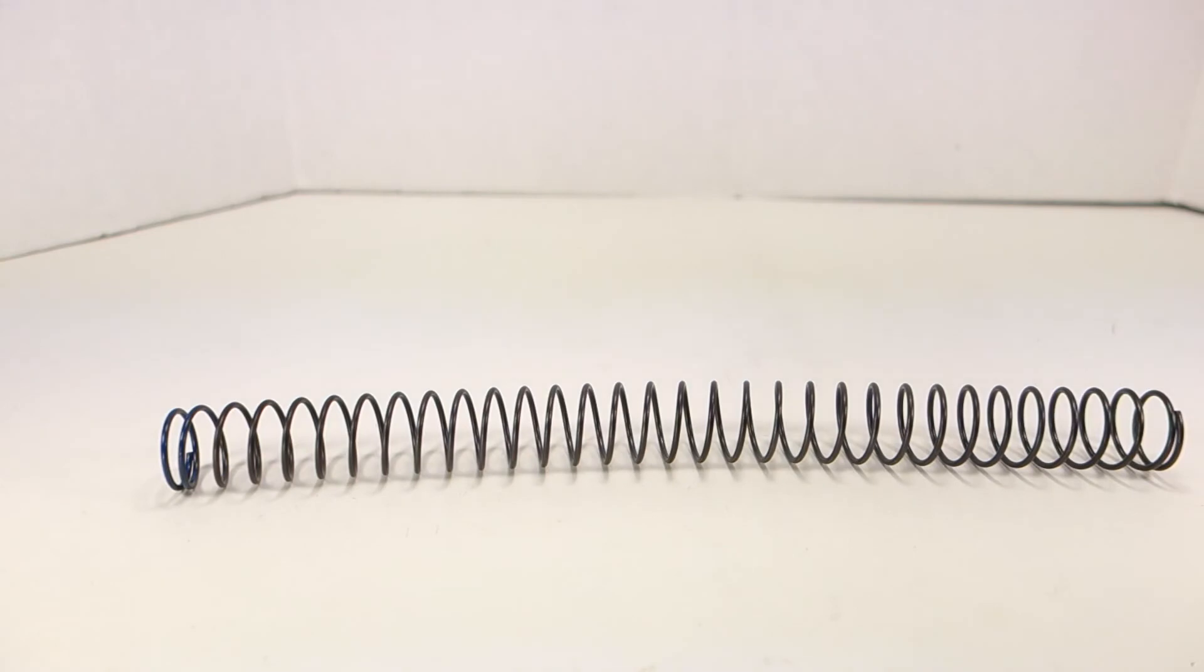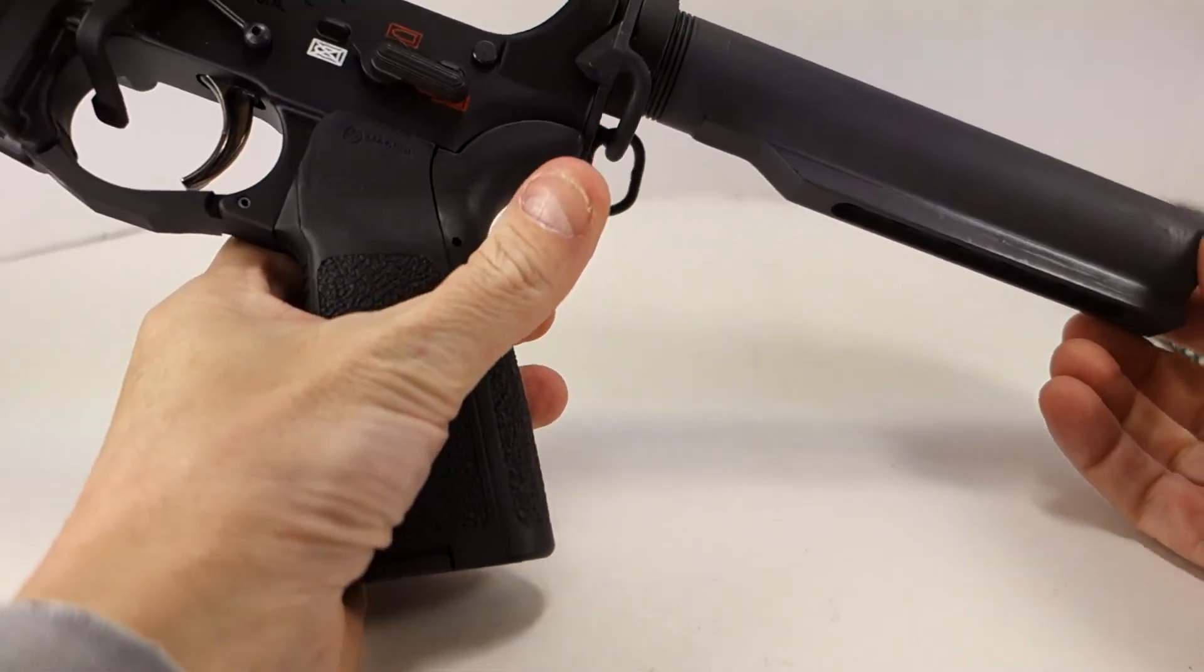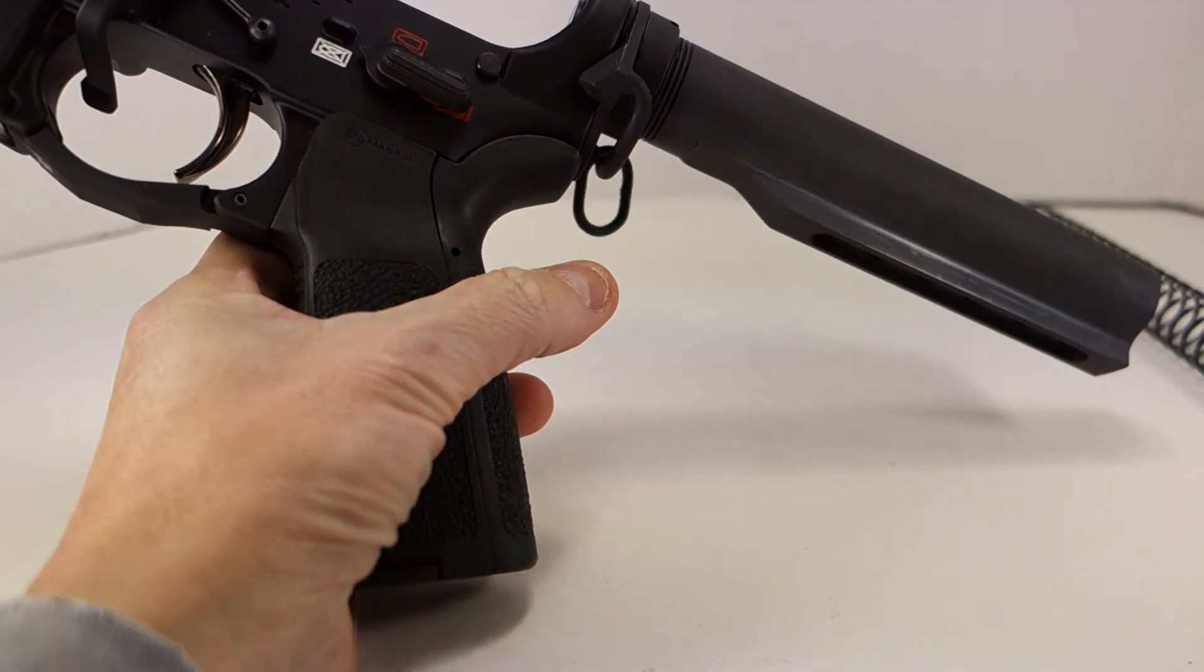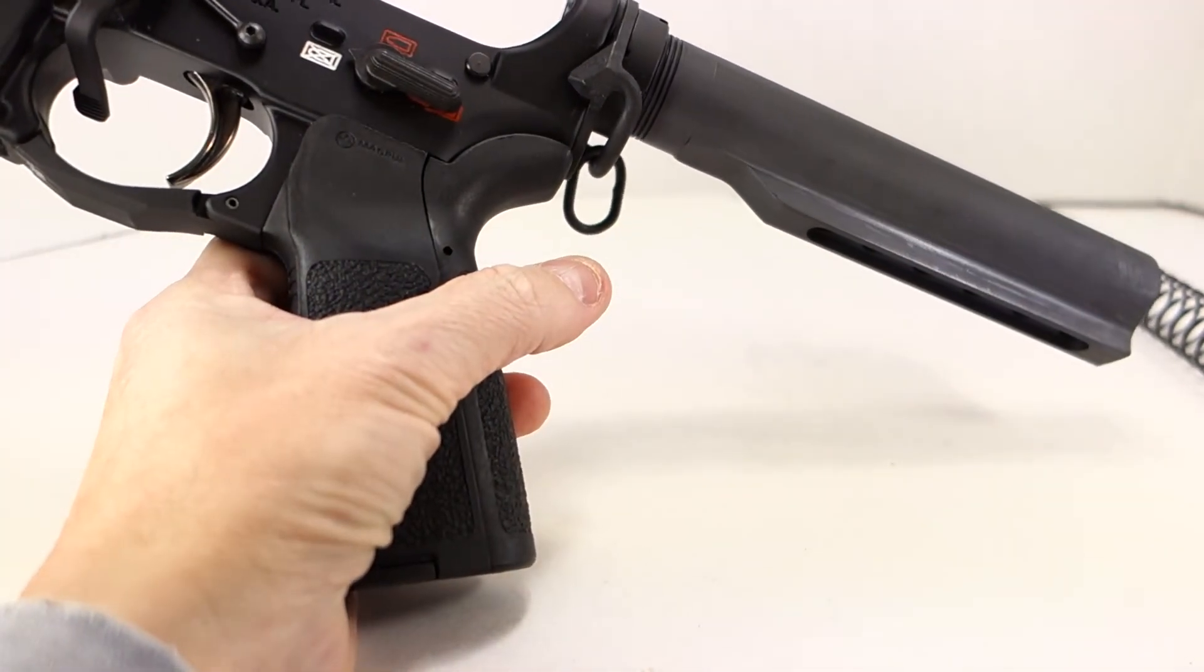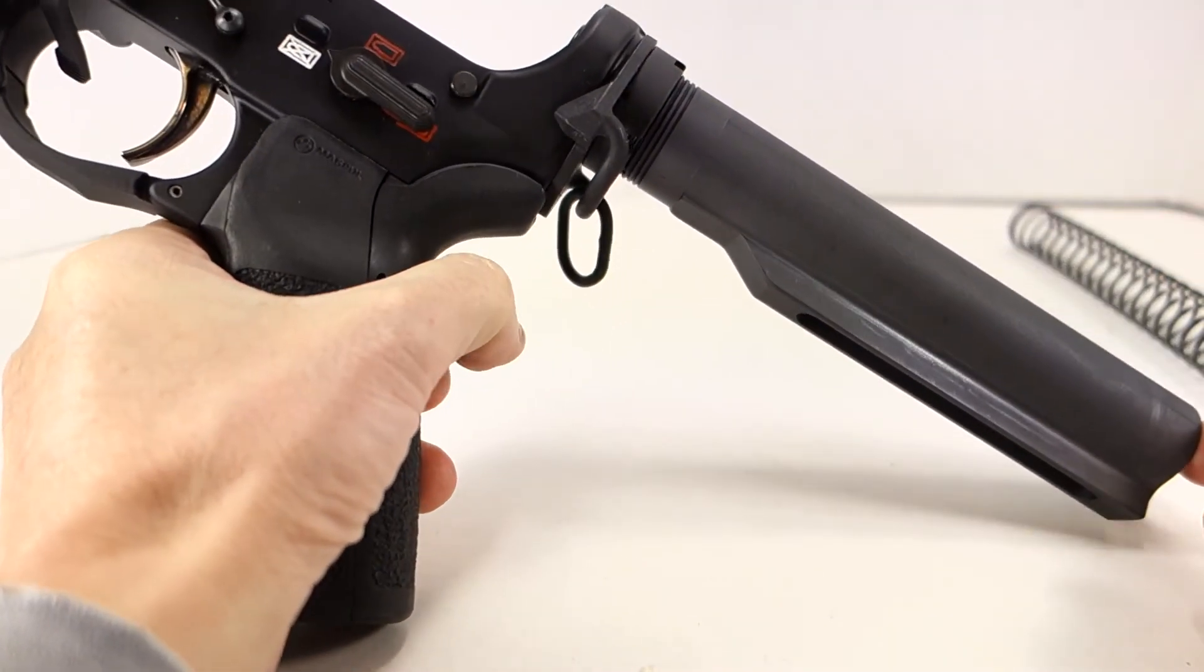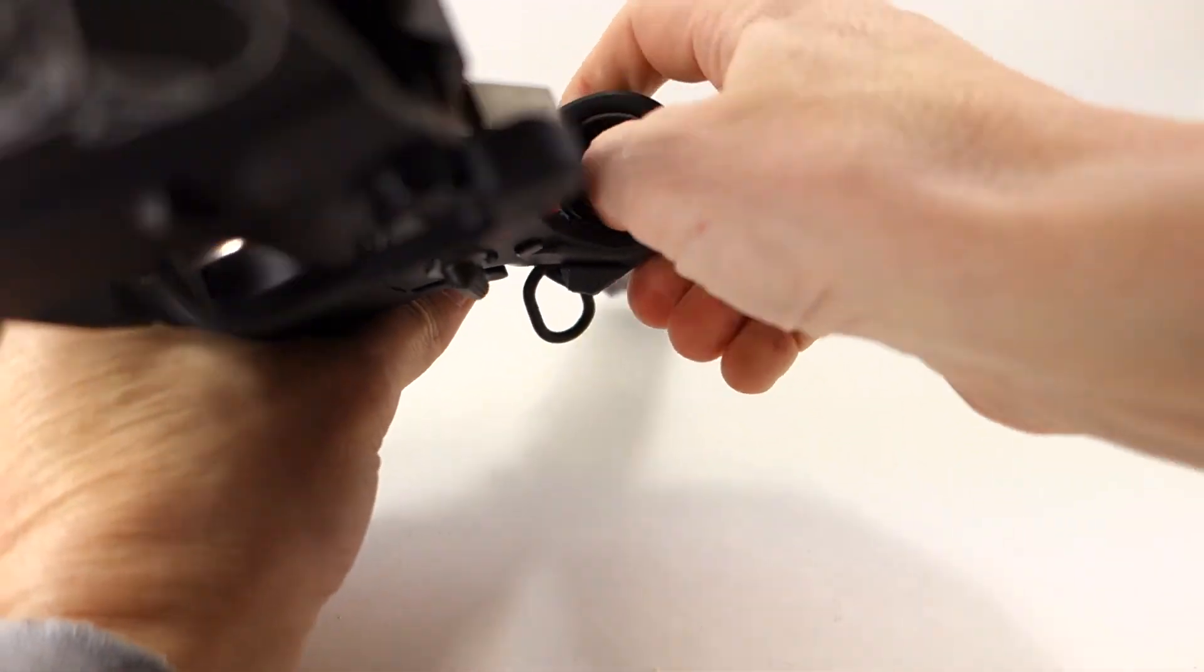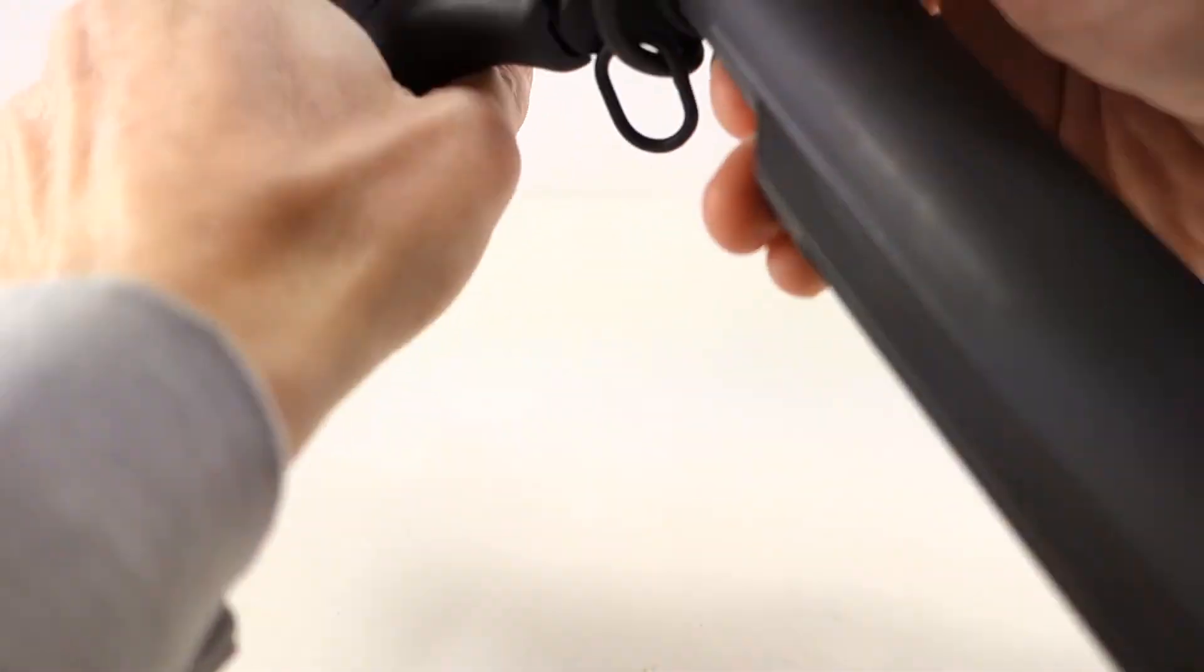What I'm going to do today is I have my Spikes Tactical lower here and it has a Spikes Tactical buffer tube assembly on it and the ST-T2 buffer and the stainless steel Spikes 17-7 spring.